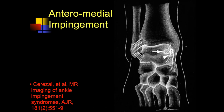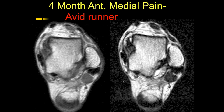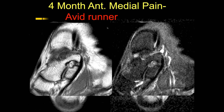Anteromedial impingement is typically soft tissue impingement. A patient with four months of anteromedial pain who is an avid runner. There is soft tissue thickening and prominence along the anterior medial ankle — anterior medial impingement. The adjacent flexor tendons are intact. We can see effacement of fat and soft tissue thickening. This was anteromedial impingement due to repetitive trauma from running.